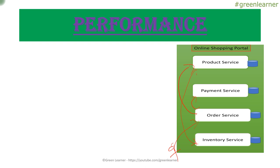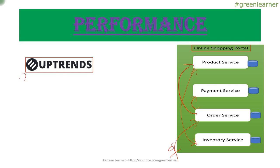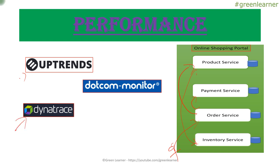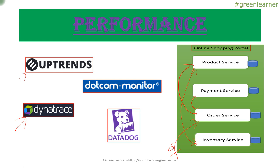There are different tools available to monitor application performance. First, we have Uptrends and Dotcom-Monitor. We also have Dynatrace, which we use in our company — it's very efficient, effective, and fantastic. Datadog is another great option. There are many more tools available — you can Google and find additional ones. That's all about measuring the performance of the application.